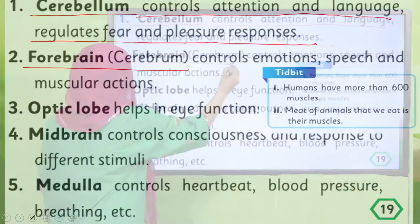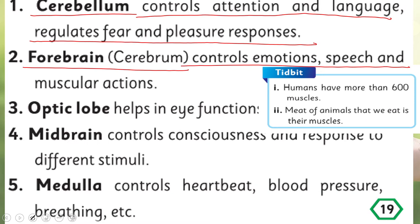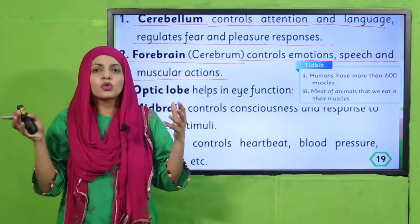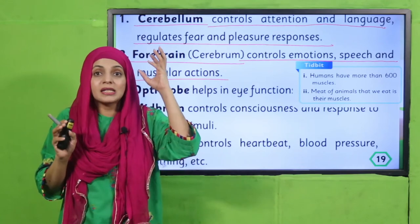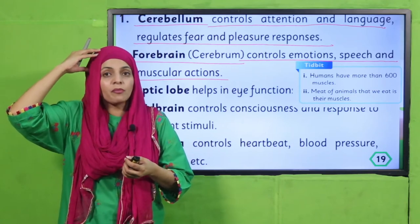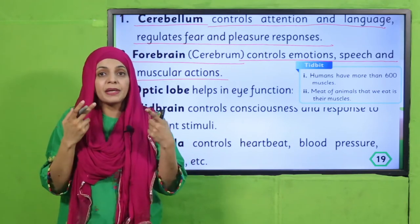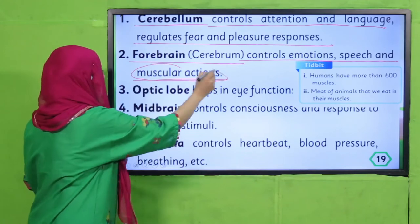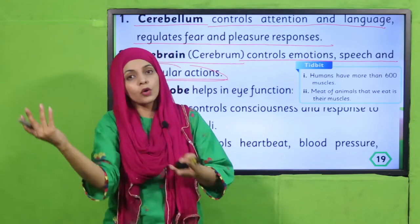The forebrain, also called the cerebrum, controls emotions, speech, and muscular actions. Your emotions — whether you feel sad or happy — are controlled by the cerebrum. It also helps you to speak: languages stored in the cerebellum, and the cerebrum gives the order to your tongue to speak. It also controls your muscular actions — when you want to move your muscles, the cerebrum controls those actions.